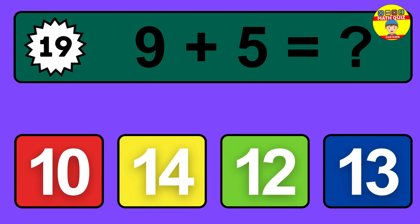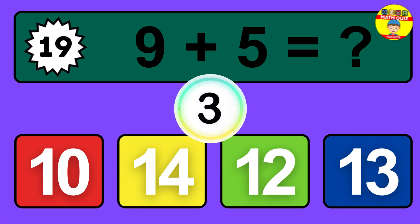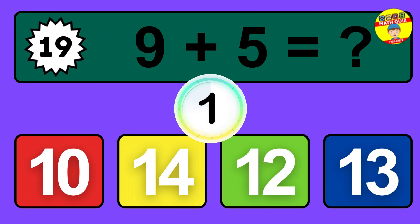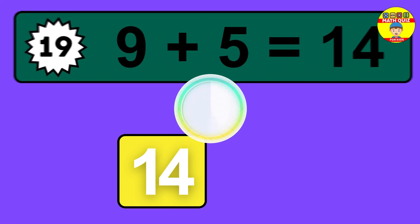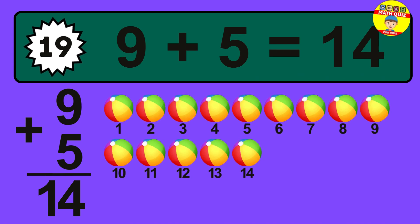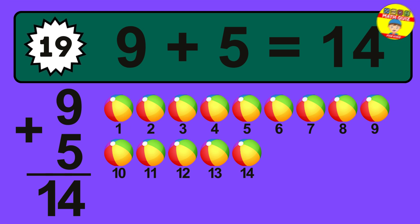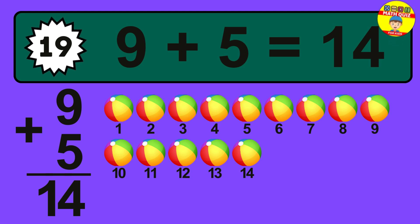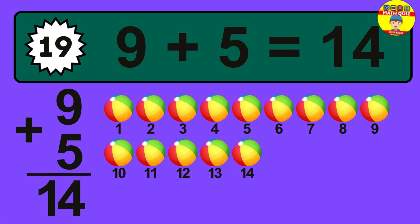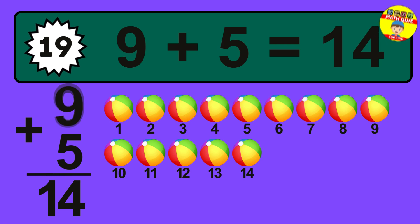Question 19. 9 plus 5 equals what? The answer is 9 plus 5 is 14. Let's count it: 1, 2, 3, 4, 5, 6, 7, 8, 9, 10, 11, 12, 13, 14.